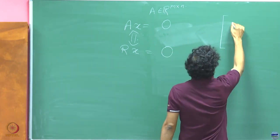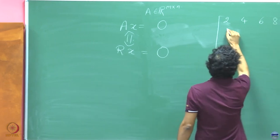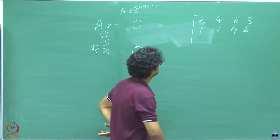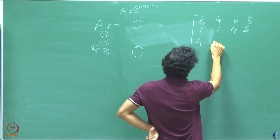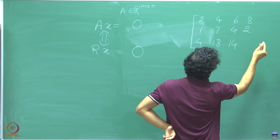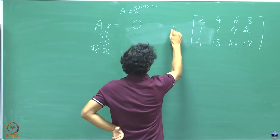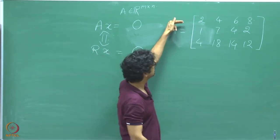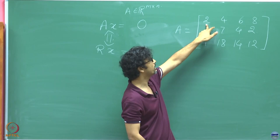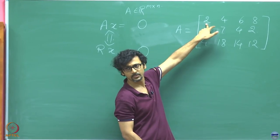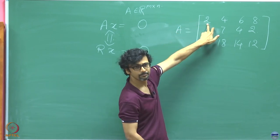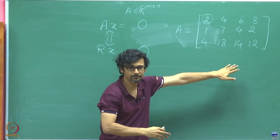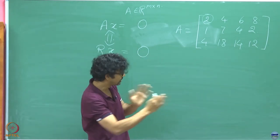Let me take this example: the matrix with rows 2, 4, 6, 8; then 1, 7, 4, 2; and 4, 18, 14, 12. Suppose this is my A matrix and I want to get it to row reduced echelon form. The first non-zero entry in the first row is the first entry itself, so we need a leading one there. I am going to combine multiple steps at once, dividing the first row by 2 to get 1, 2, 3, 4.